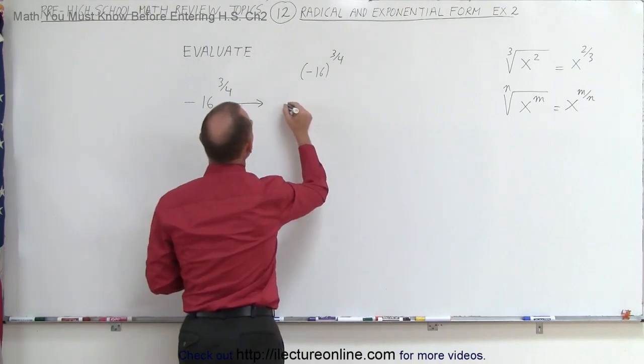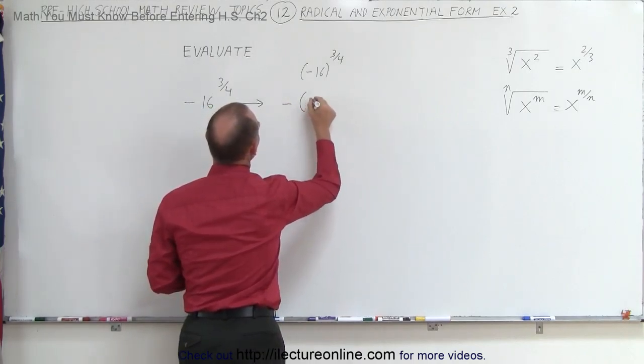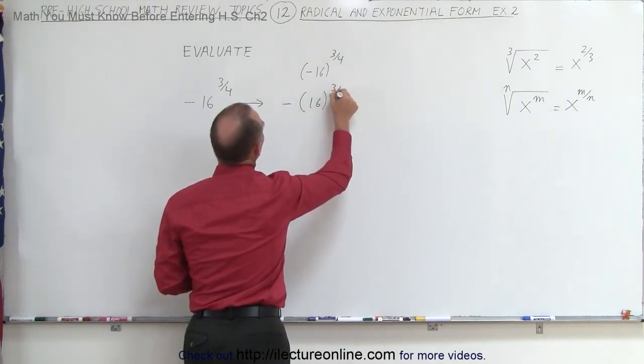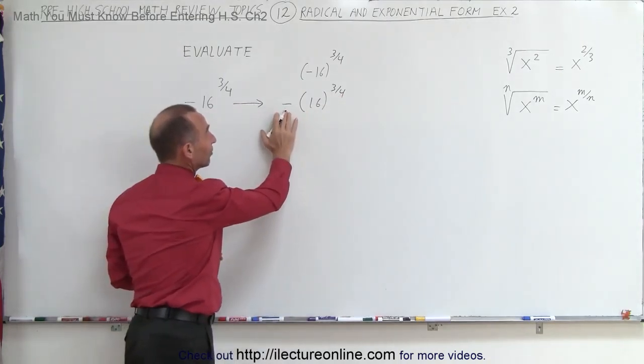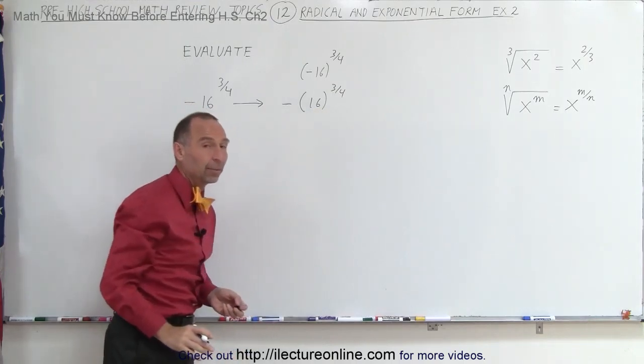In other words, this is the same as writing minus the quantity 16 raised to the 3 fourths power. Here it's actually a little bit more clear that the exponent does not affect the negative sign, only the number inside of parentheses.